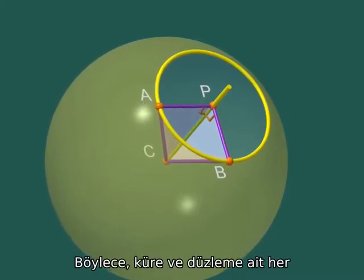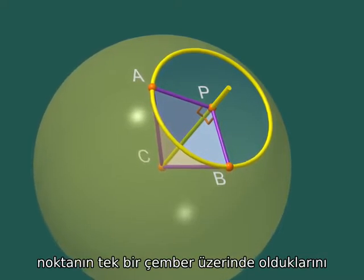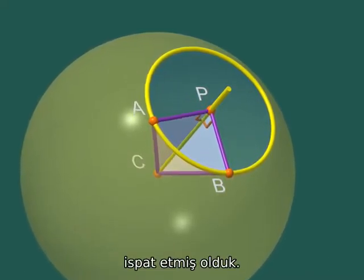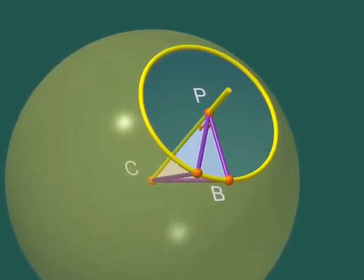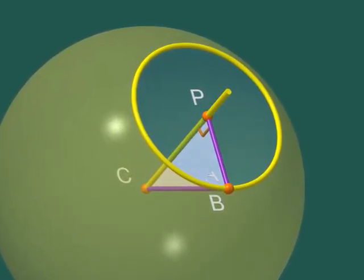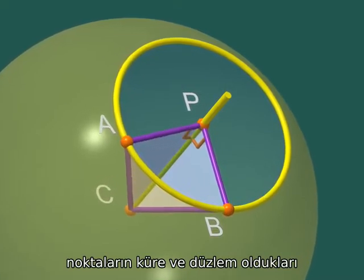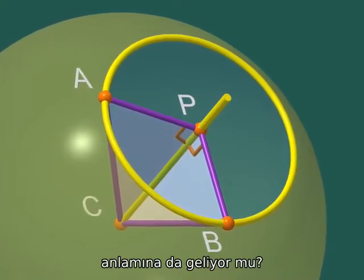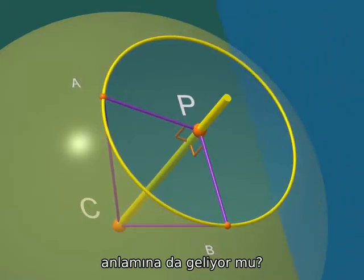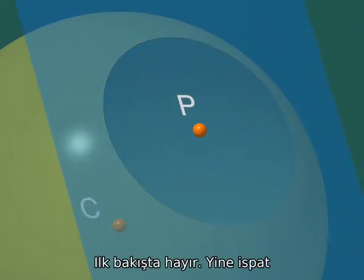Therefore, we have proved that all points which are both on the sphere and the plane belong to some circle. Does that imply that all points on this circle are on the sphere and on the plane? A priori, no. We still have to prove it.